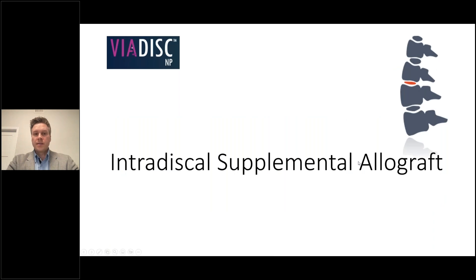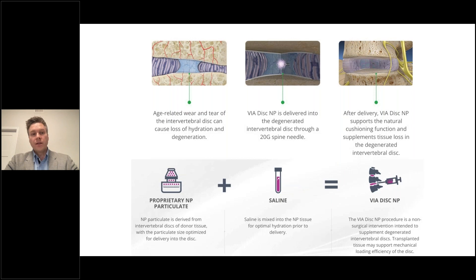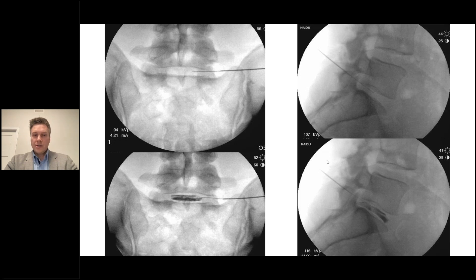The first therapy is intradiscal supplemental allograft — Viadisc is the most well-known. The aim is to restore the height of the degenerated disc, thereby decreasing pain from compressive forces. The allograft is derived from a proprietary mix of processed human nucleus pulposus tissue and spine-derived cells. It comes in a specialized container reconstituted in saline and is delivered through a 20-gauge needle into the nucleus pulposus. The matrix contains glycosaminoglycan, which creates hydrostatic pressure in the disc, drawing in water to increase water content and restore height. A discogram can be performed during the injection but is not always necessary.